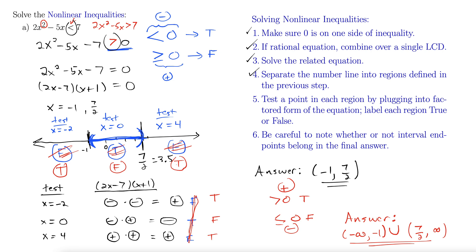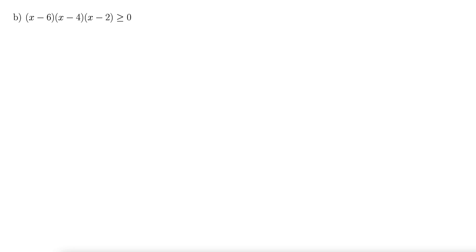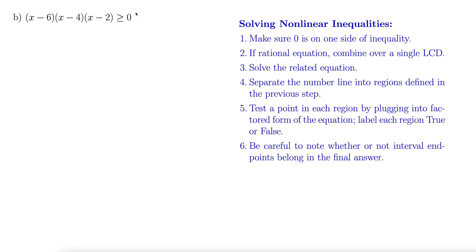Let's try another one. For B we have x minus 6 times x minus 4 times x minus 2 is greater than or equal to 0. Let's bring up the steps again, and you want to essentially internalize these steps. I know it's a lot to essentially memorize, but that's just part of it. Step 1, make sure 0 is on one side of the equality, check and check. If it's a rational equation, it's not, so don't worry about that. Solve the related equation. Now we have to do something here. We just replace that inequality with an equal sign. x minus 6, x minus 4, x minus 2 equals 0, which we can see by setting each one of these factors equal to 0 gives us x equals 6, 4, and 2.